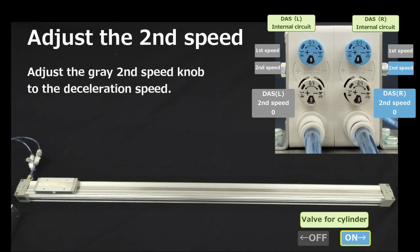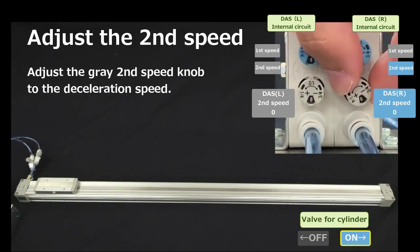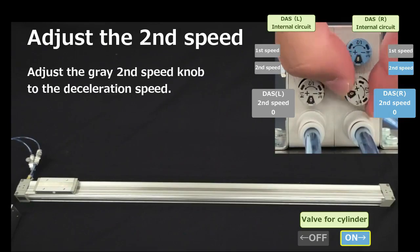Now you can adjust the second speed. Gradually open the grey second speed knob until the desired speed is reached, and allow the cylinder to reach the stroke end.